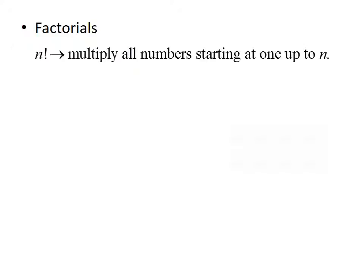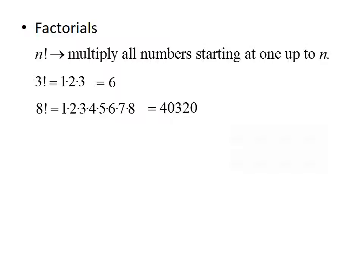Before we can talk about the binomial theorem, we need to review a couple things. First is the concept of factorials. If you see a number n with an exclamation point behind it, that's called n factorial, and it means to multiply all of the numbers starting at 1 up to n together. So 3 factorial is 1 times 2 times 3, which equals 6. And 8 factorial is 1 times 2 times 3 times 4 times 5 times 6 times 7 times 8, which equals 40,320. Also note that 0 factorial is equal to 1.